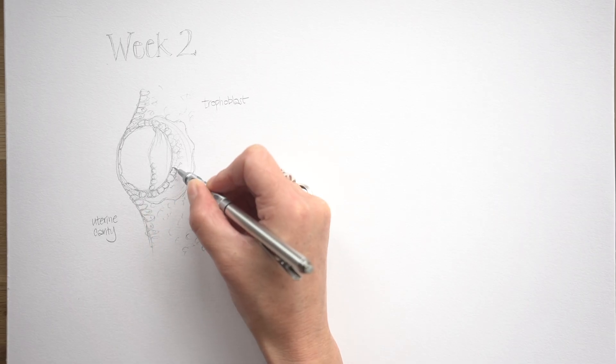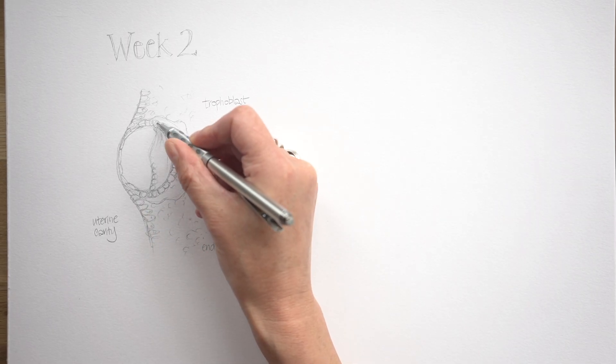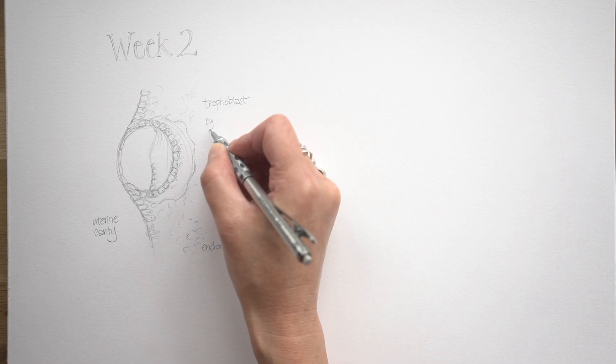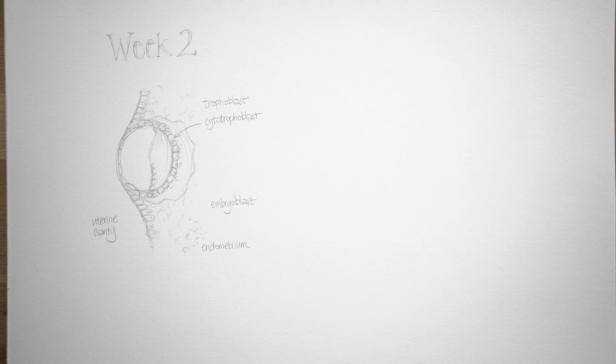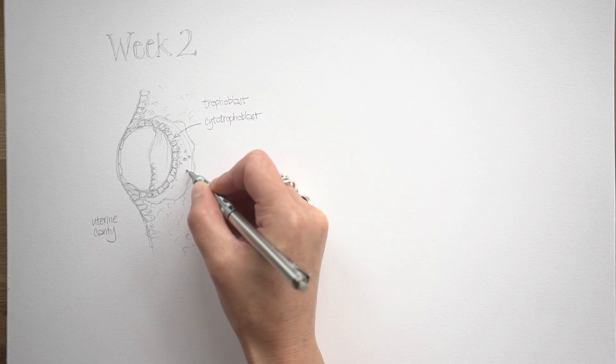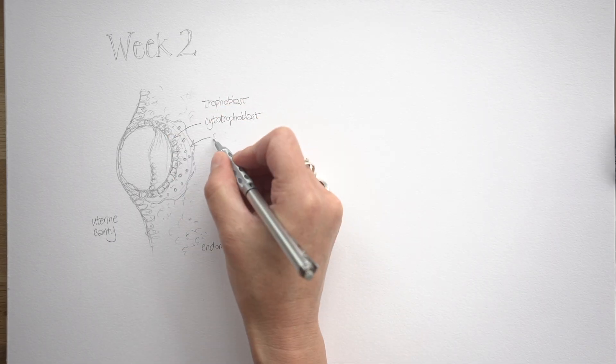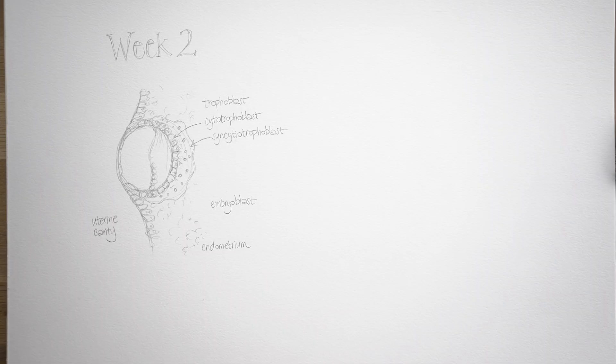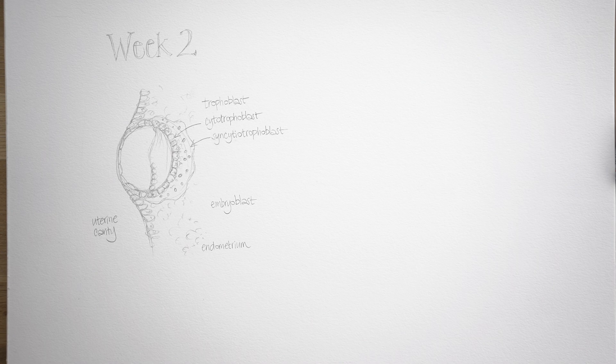In this second week of development, we're going to see lots of things splitting in two, and we're going to see the appearance of two new cavities. So I sometimes call the second week the week of twos. That trophoblast splits into two layers. It has an inner cellular layer, and those cells are fusing together to form an outer layer, which is a big multinucleate mass. So the inner cellular layer is called the cytotrophoblast, the cellular trophoblast.